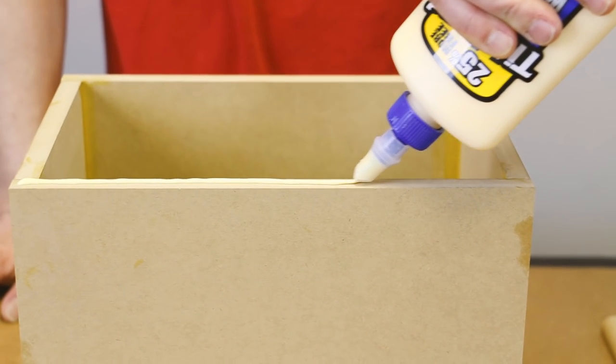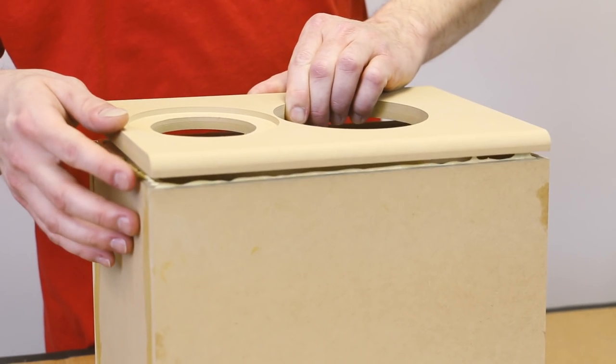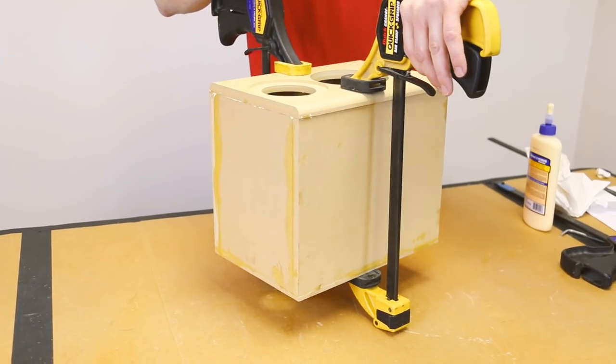Lastly for the enclosure, add glue to the rest of the front baffle on the top. Clear off all excess glue and clamp it down and let it dry like before.